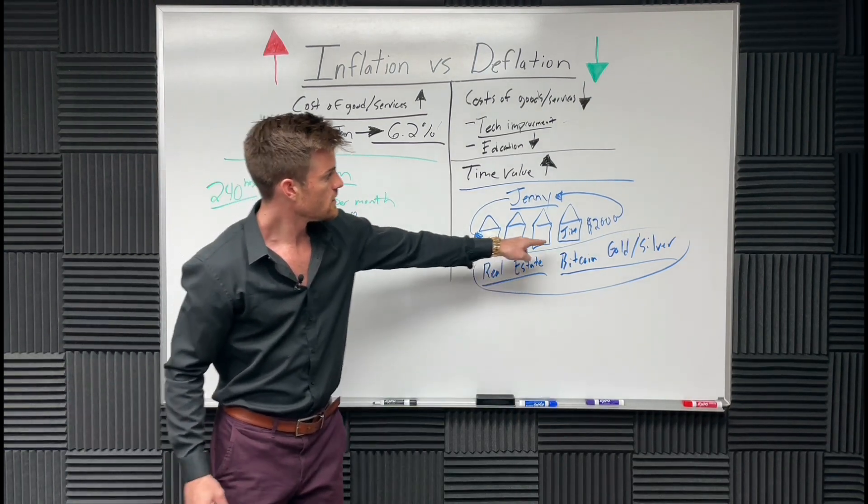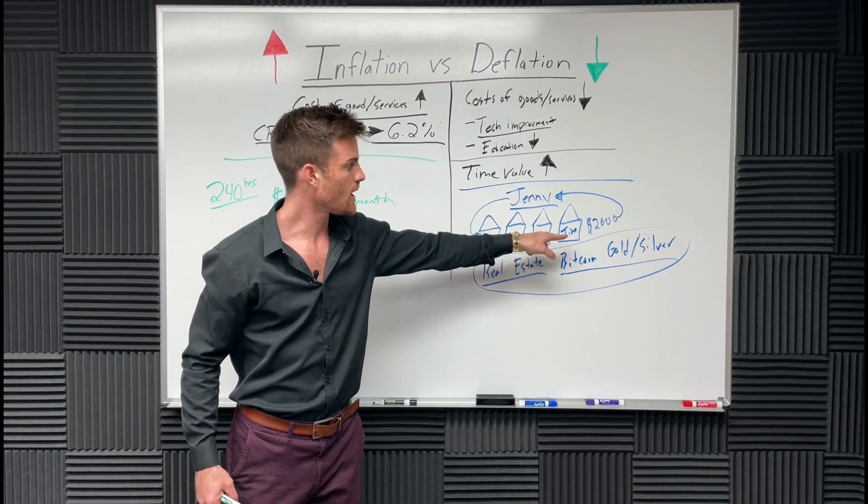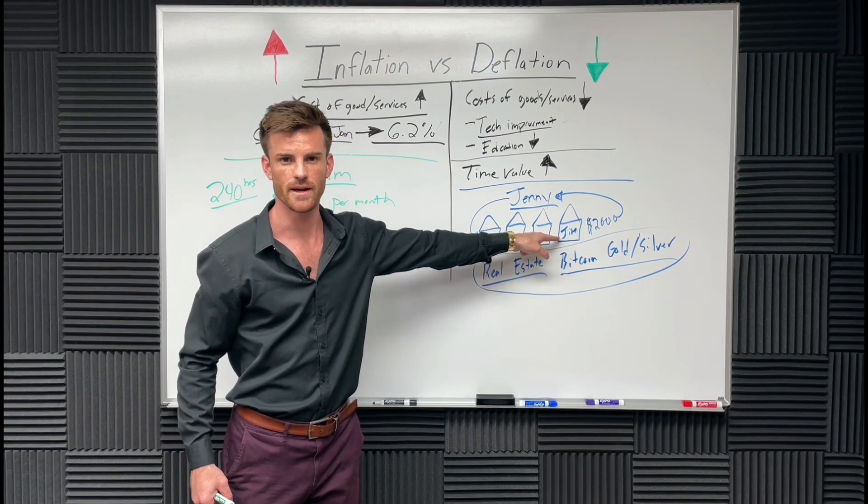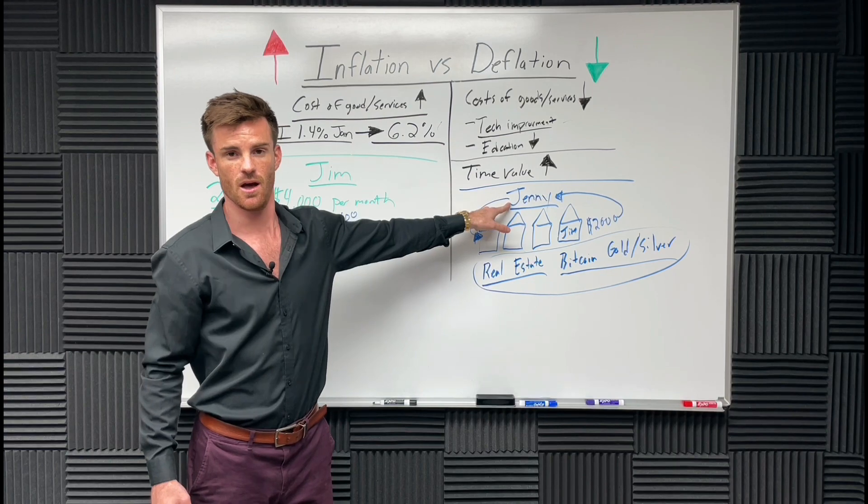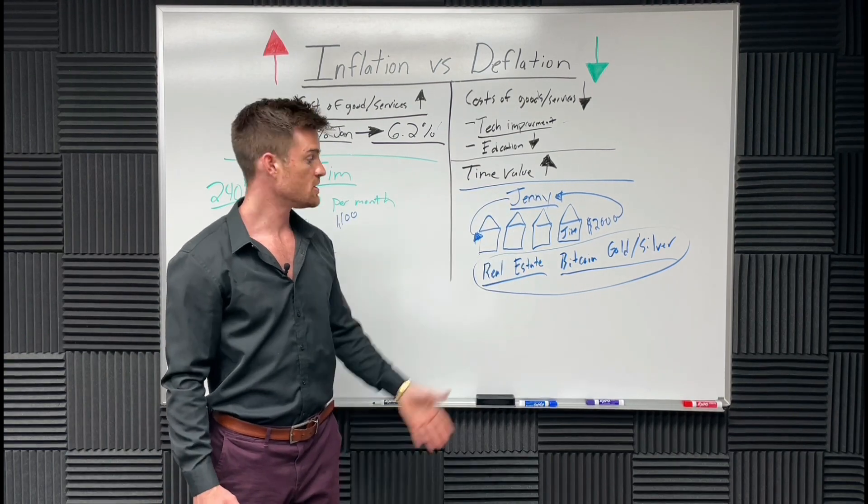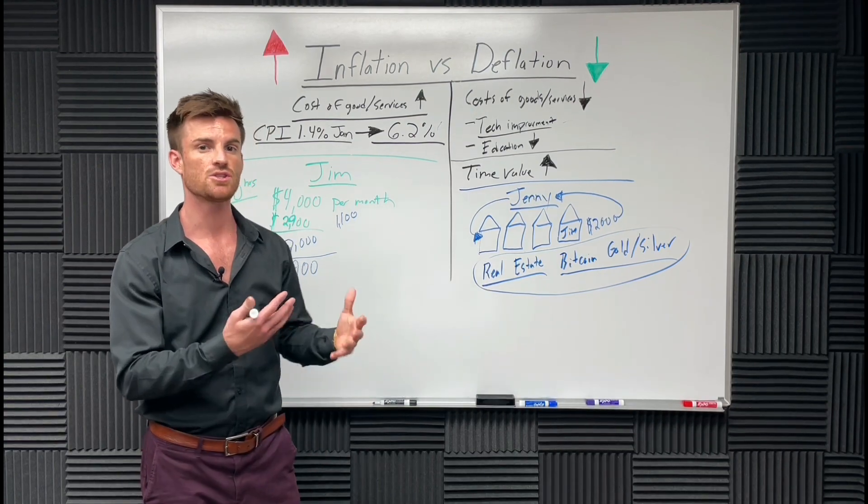And oh yeah, by the way, Jim's rental is probably going to go up by 10% next year, 5% to 10% next year. So he's probably going to be paying $2,100 to $2,200 next year and the year after that. So is Jenny in a bad position? No. She can change her prices. She might actually own a business. She probably does. So she can change the prices because she owns the business.